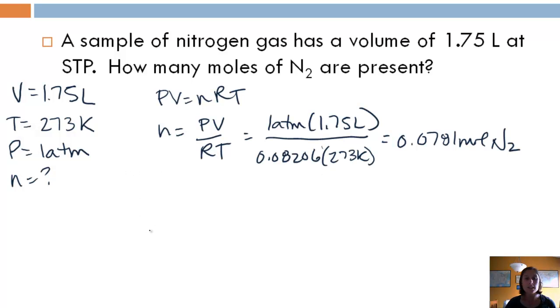But since it says that it's at STP, we can also find molar volume. And so we know that we have 1.75 liters, and we know that the molar volume is 22.4 liters in one mole if it's at STP. And so we can use that as a conversion factor, and we get the same exact answer. Okay, so you have a couple options. The reason that second one works is because it is at STP.